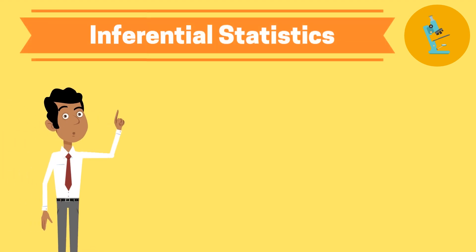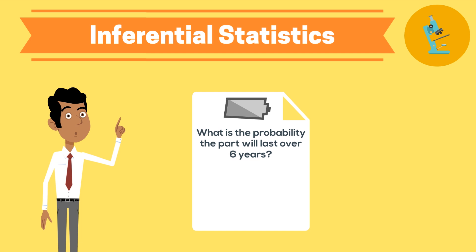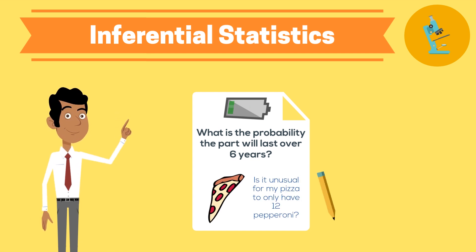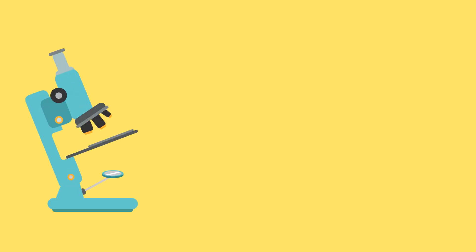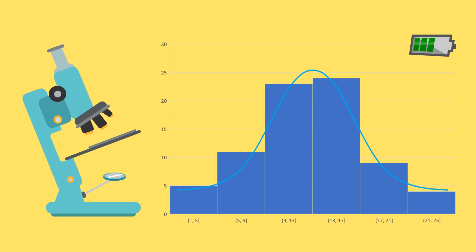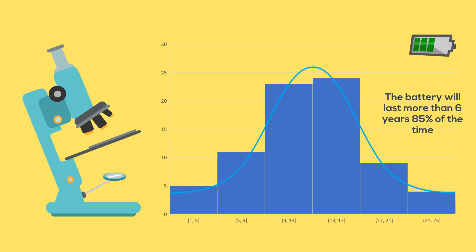Inferential statistics is about making predictions from our data. The goal is to take just a small bit of information, analyze it carefully, and then see what conclusions we can infer about the bigger picture. It is this part of statistics that can seem the most mysterious. But in reality, it's one of the most powerful and allows us to find even more information from the data we've already collected.